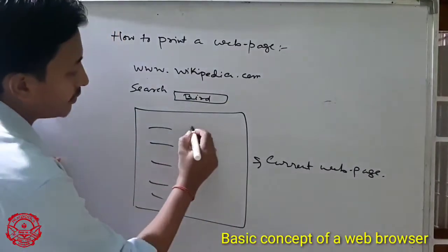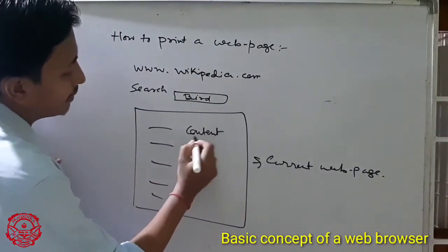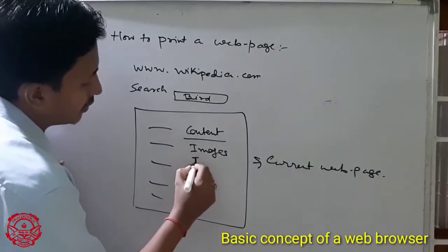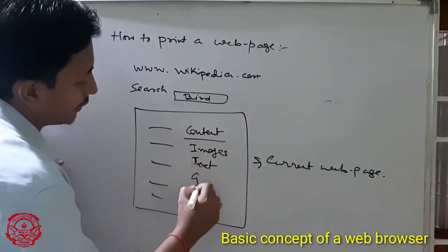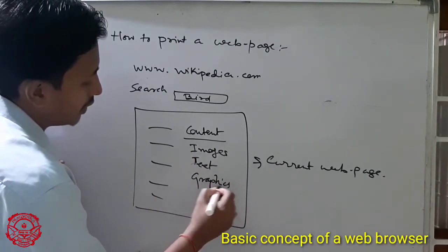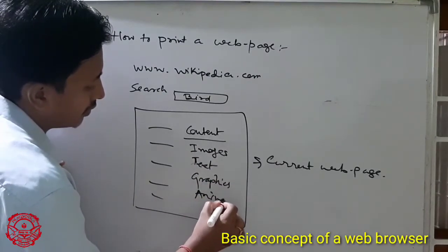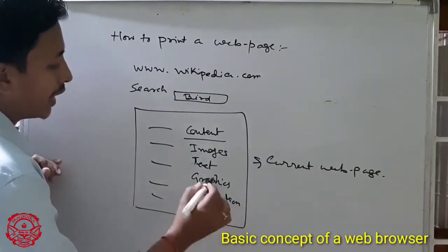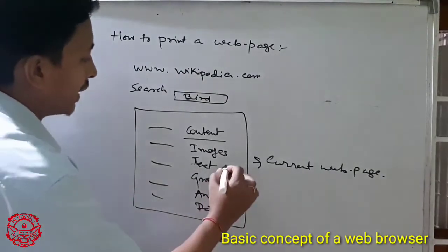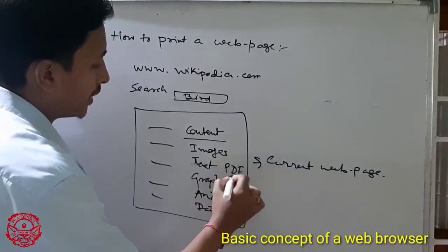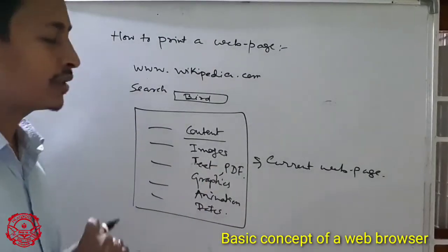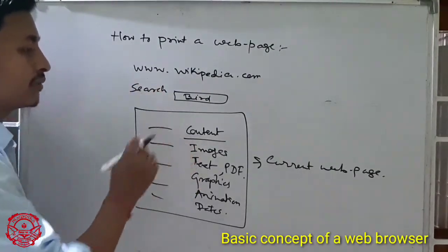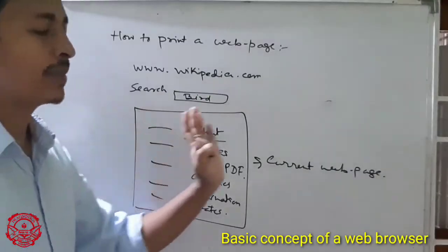It will automatically print the content of this web page. Content of the web page means it may be sometimes images, tags, graphics, animations, or PDF files — anything, whatever the content is available or included in this web page, all the content will be printed.